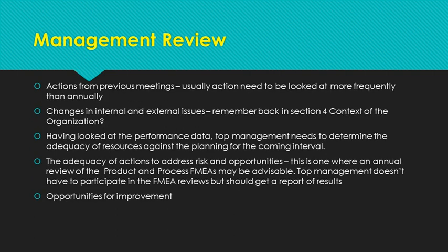Having looked at all that information, top management needs to look at how much resources are needed, where they're needed, and what they can do. You may have to figure out improvement projects based on resources and spread them throughout your time period. For adequacy of actions to address risk and opportunities, I would suggest that middle and direct line management look at the product and process FMEAs and report back to management on changes. Top management doesn't need to know how to build the widget — they just need to know that their people are on top of making sure the risks are controlled.